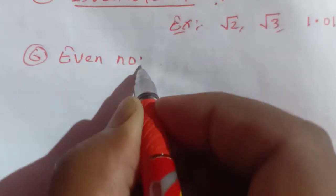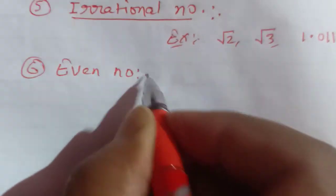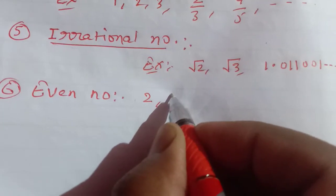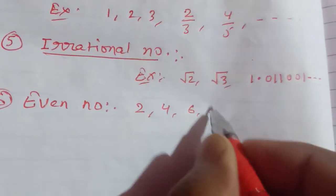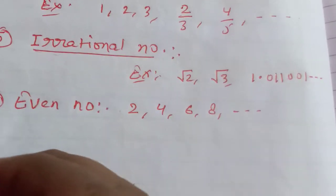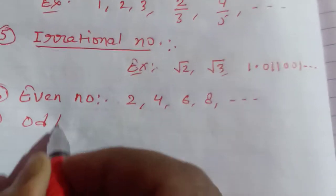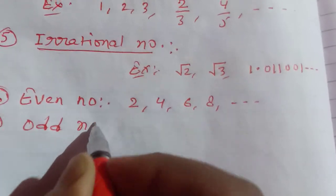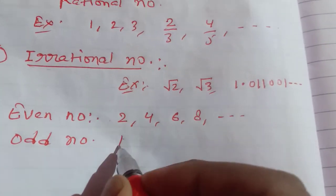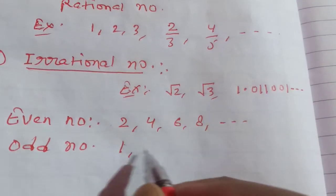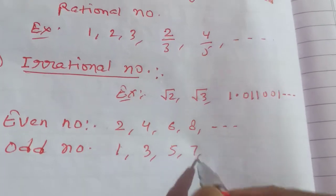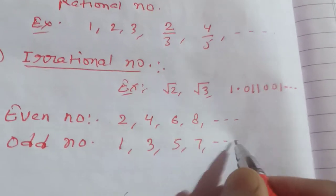The next number type is even number. The number that is divisible by 2 — such as 2, 4, 6, 8 — is called an even number. Odd number: the number that is not divisible by 2 — such as 1, 3, 5, 7, and so on — is called an odd number.